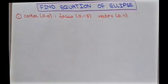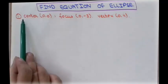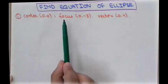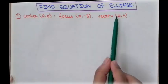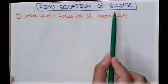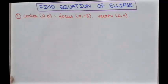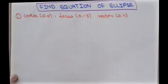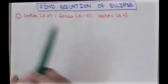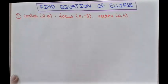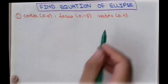In our first example, we are given three points: the center point at the origin, a focus point, and a vertex point. If you notice the x-coordinate, the value is 0, which is the same as the center's x-coordinate. In the focus and vertex points, there is a variation in the y-coordinate. So we have to find the value of a, b, and c using this given information by comparing the focus and vertex points to the general equation of the ellipse.